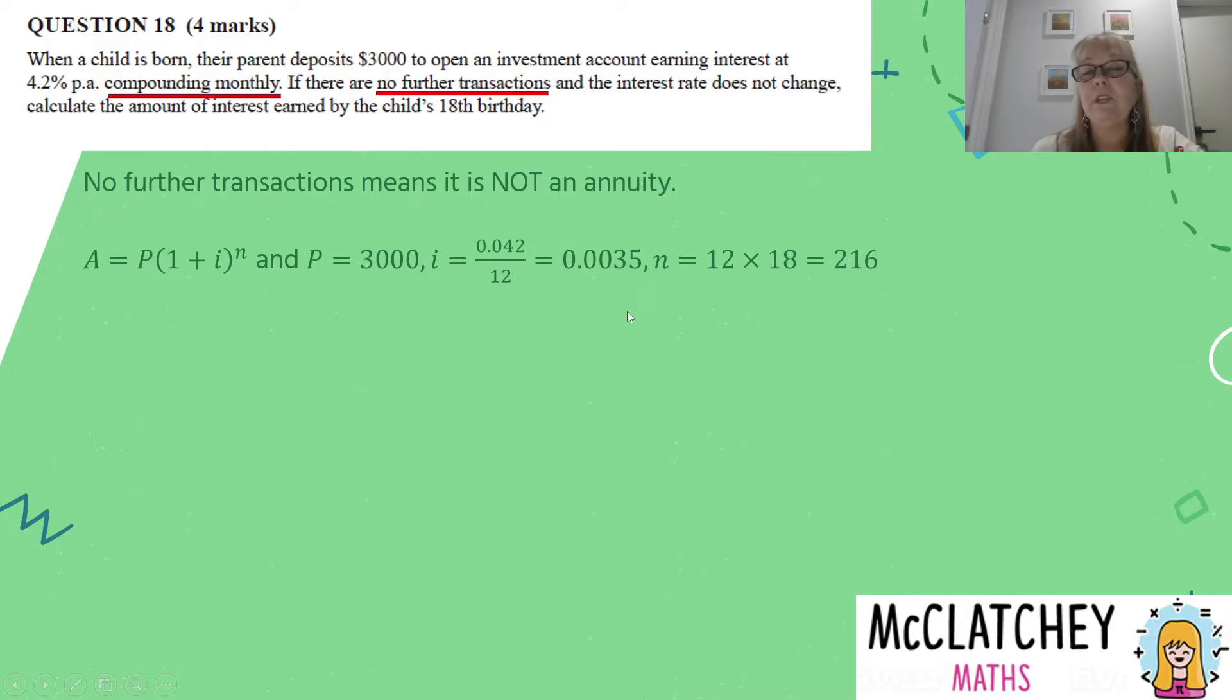The next thing we need to do is calculate the number of compounding periods. Now we've got 18 years, but because it compounds monthly and there's 12 months in a year, the total number of compounding periods will be 216. Now that we have stated our variables, we've correctly determined the values for i and for n and we get our first of the four marks.